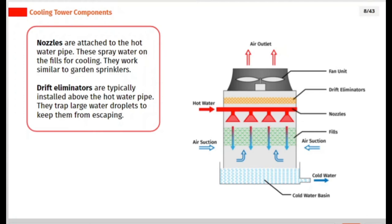Drift eliminators are typically installed above the hot water pipe. They trap large water droplets to keep them from escaping.